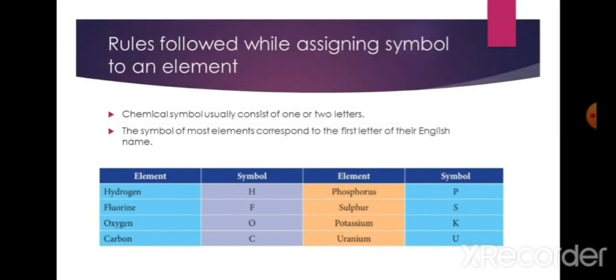Potassium uses the symbol K. Why? Because the Latin name of potassium is Kalium (K-A-L-I-U-M), so it uses K. Uranium uses the symbol U.